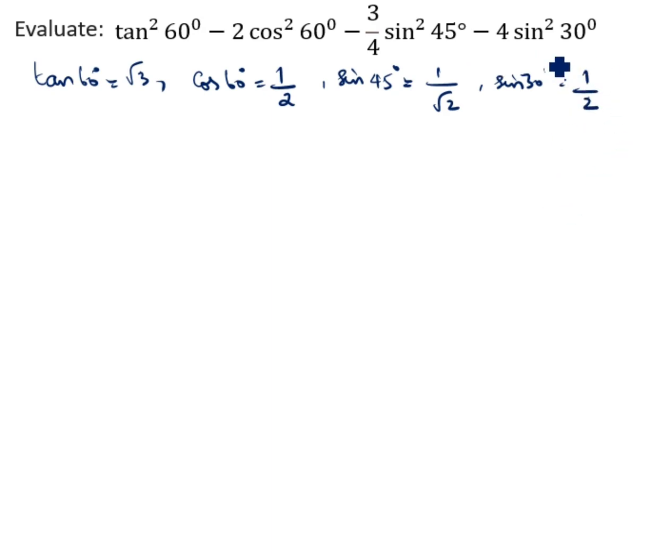So we will substitute these numbers. Tan² 60° - tan 60 is √3, right? So (√3)² minus 2 times cos² 60. Cos 60 is 1/2, so 2(1/2)² minus 3/4. What is sin 45°? 1/√2. So (1/√2)² minus 4 times sin² 30. Sin 30 is 1/2, so 4 times (1/2)².